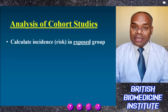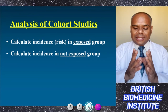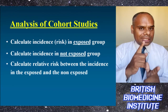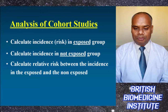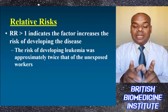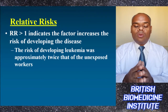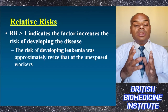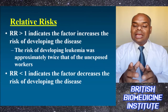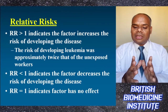Under the analysis of cohort studies, we calculate the risk or incidence in the exposed group, the incidence in the non-exposed group, and the relative risk between the incidence of exposed versus non-exposed patients. If the relative risk is greater than one, it indicates the factor increases the risk of developing the disease — for example, the risk of developing leukemia was approximately twice that in unexposed workers. If relative risk is less than one, the factor decreases the risk; if equal to one, the factor has no effect.